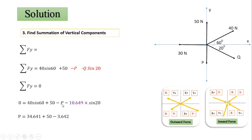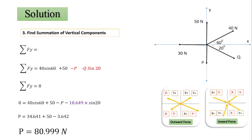Solving for P: P = 40 sin 60° + 50 − 10.649 sin 20°. The value of 40 sin 60° = 34.641, and 10.649 sin 20° = 3.642. Therefore P = 34.641 + 50 − 3.642 = 80.999 N, which is approximately equal to 81 N.